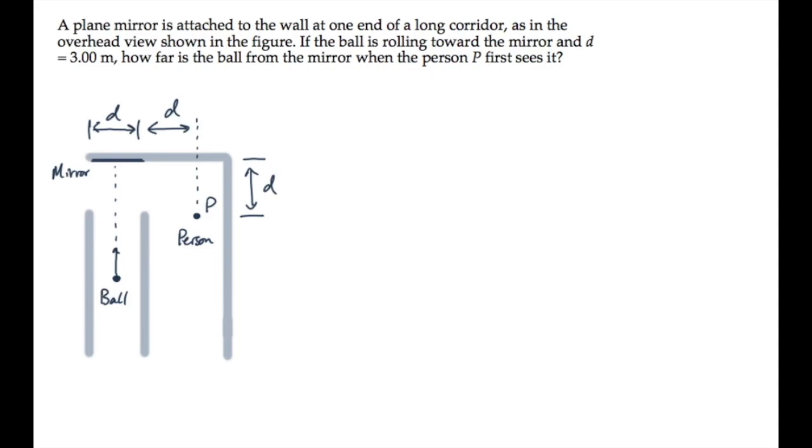Looking down on the scene, we see a ball rolling up a hallway towards a mirror. There's a person off to the right, a distance d from the wall. And the person and the mirror are separated by a horizontal distance d. We're asked to find how far the ball is from the mirror when the person first sees it.